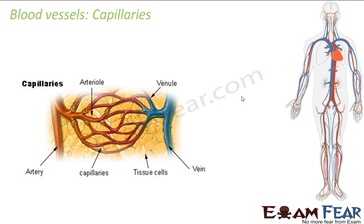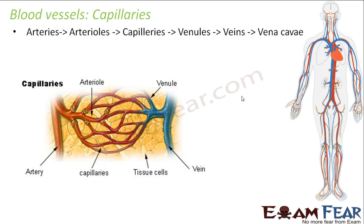Now let us look at the third blood vessel — the capillaries. The arteries branch out to form smaller tube-like structures known as arterioles. These arterioles further branch out to form even thinner structures called capillaries, which are the thinnest and smallest blood vessels. They join together again to form venules, which in turn join together to form veins, and veins join together to form the vena cava.